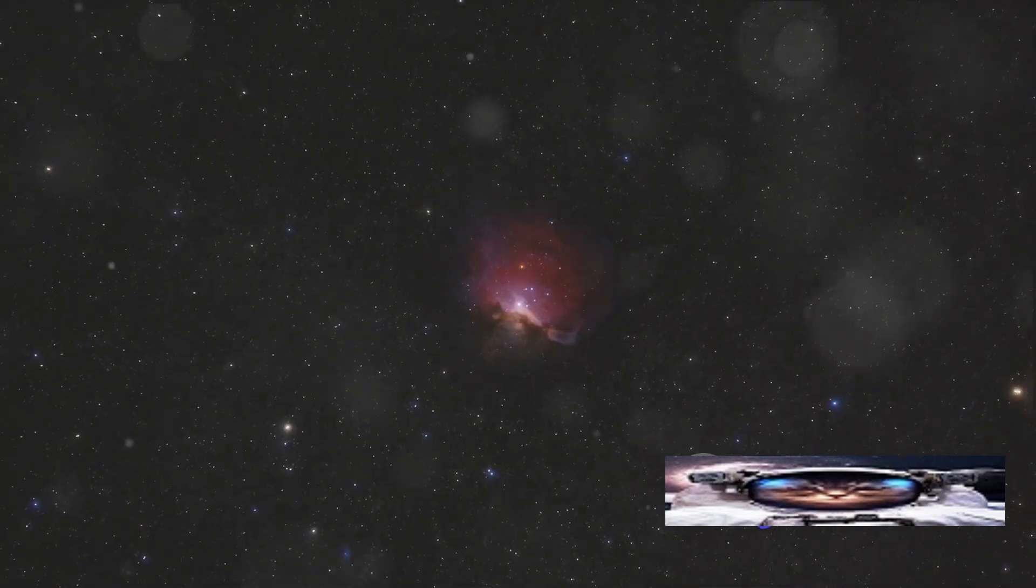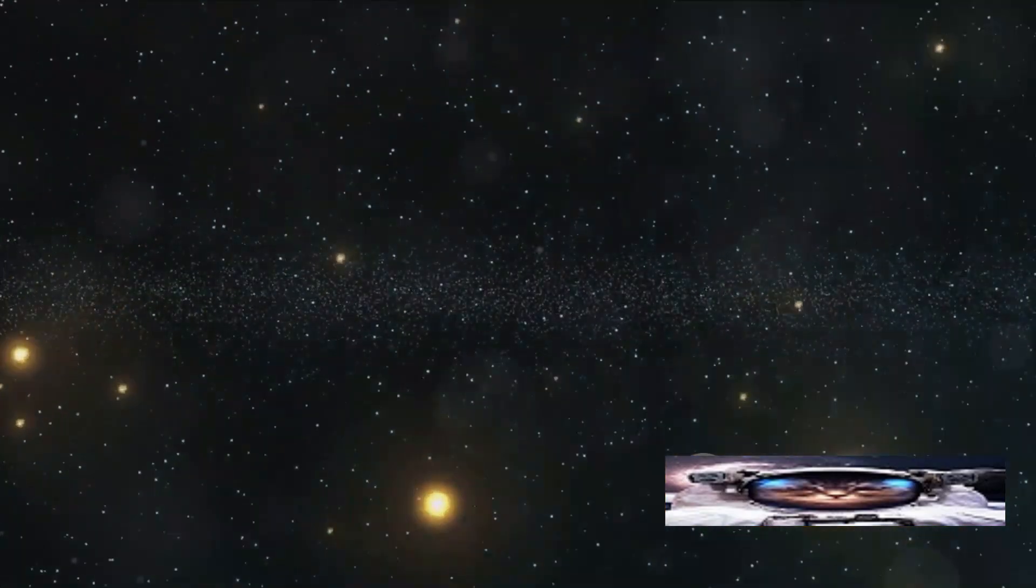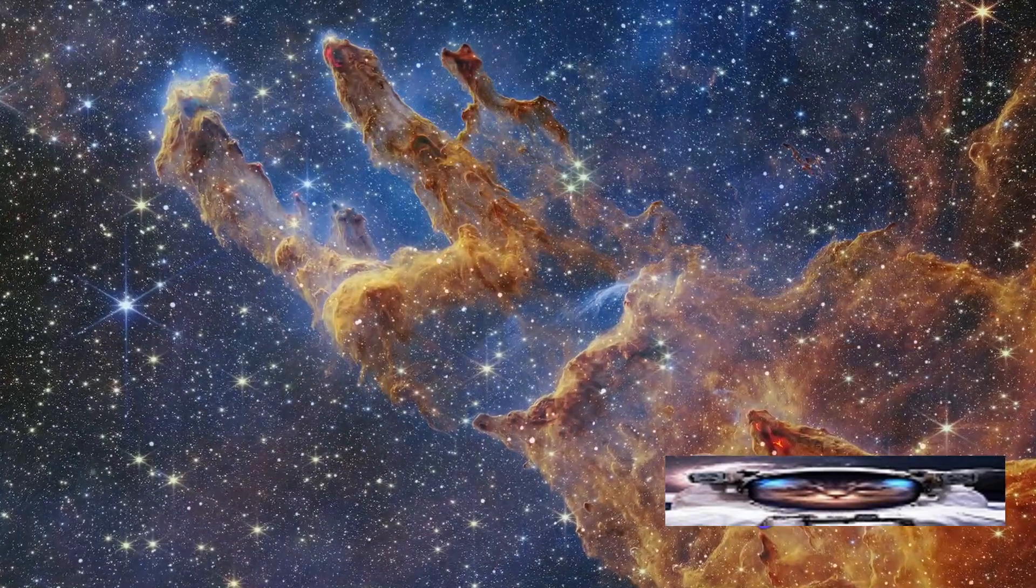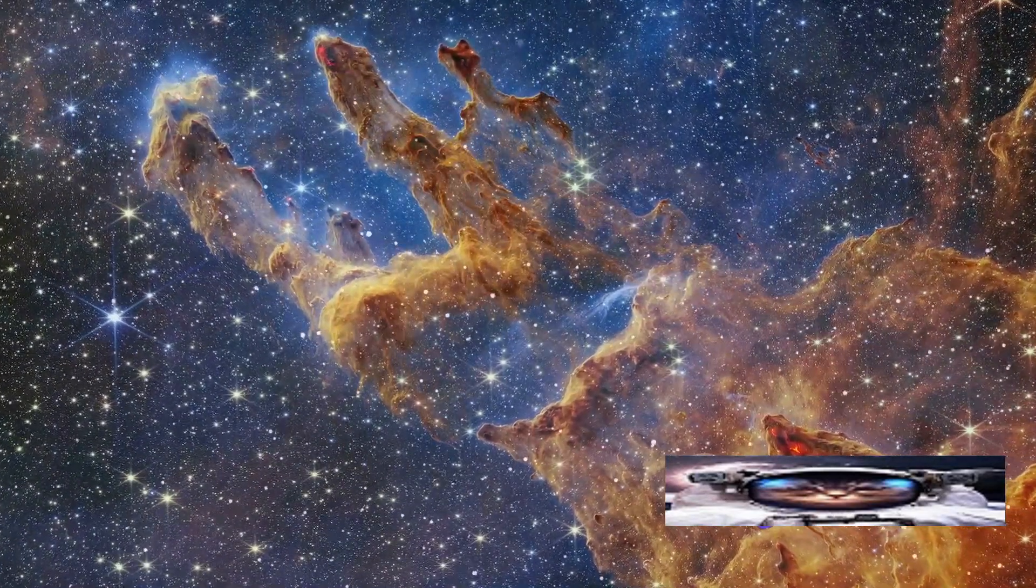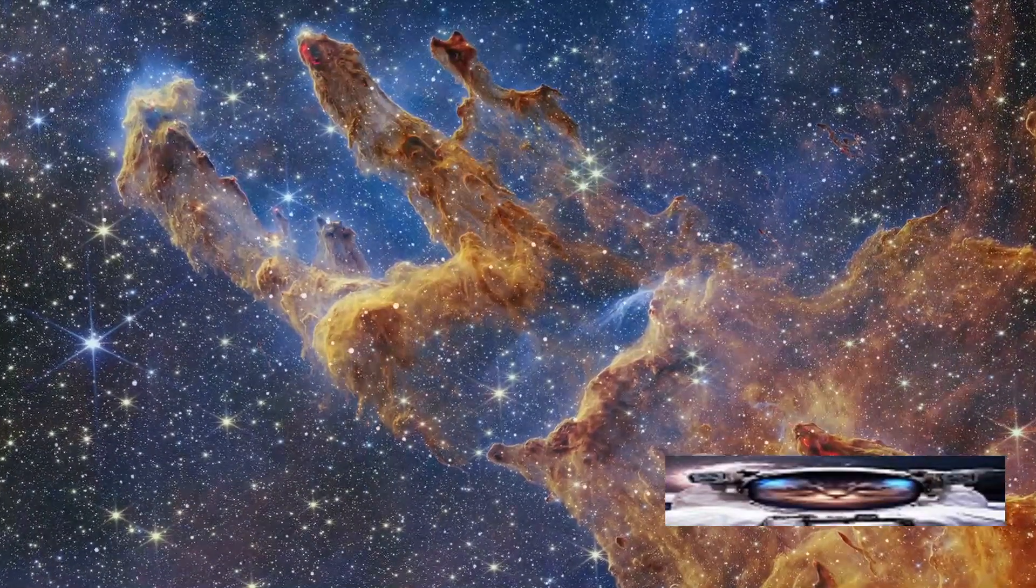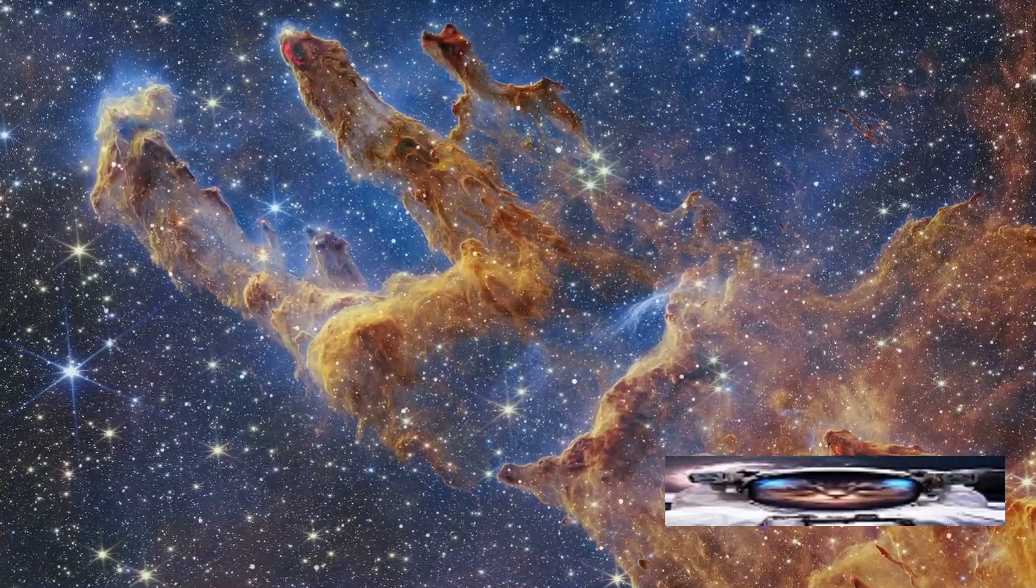Next, let's venture towards the Eagle Nebula, also known as the Pillars of Creation. This nebula, about 7,000 light-years away, is famous for its towering pillar-like structures. These pillars, composed of dense gas and dust, are places where new stars are being born. The striking image of this nebula, captured by the Hubble Space Telescope in 1995, is one of the most iconic images in astronomy.